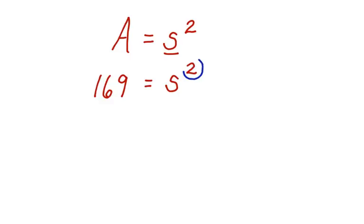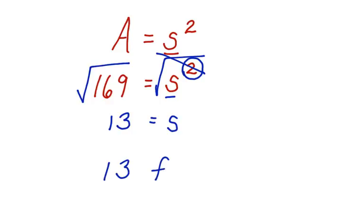Now, we need to get rid of this 2, the square, because we only want the length of the side. We can do that by taking the square root of both sides. These cancel, leaving S alone. The square root of 169 is 13. So the side length of the platform is 13 feet.